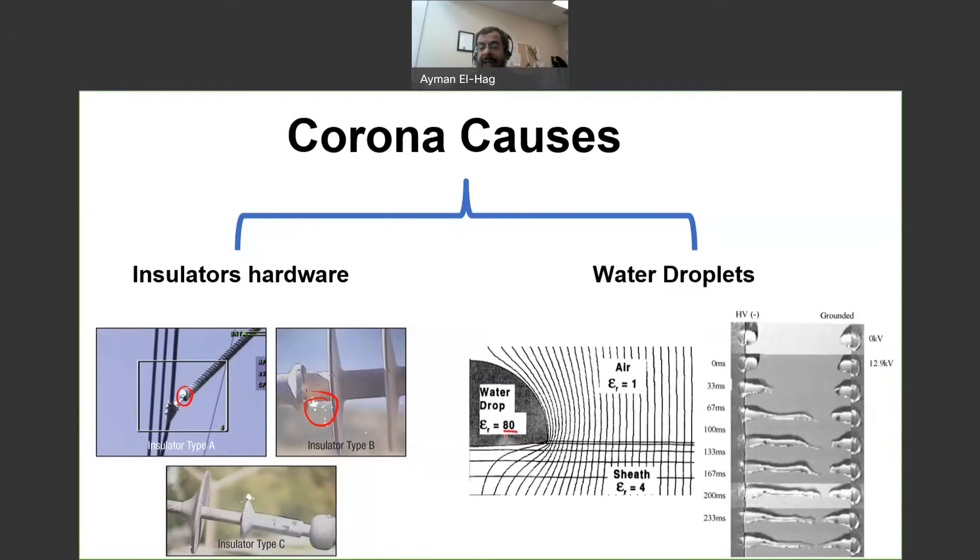air which is one, and the sheath of the material which is around four, you will have here a very high electric field intensified. And this can initiate Corona if the electric field is high enough to cause ionization of air. So we'll start to have Corona here at the tripling point.